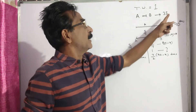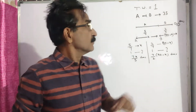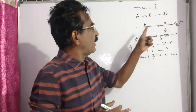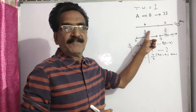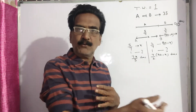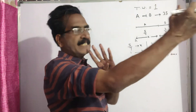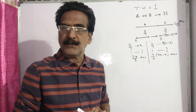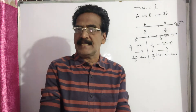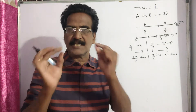A and B can complete a work in 35 days. If A completes 5/7 of the work and leaves the remaining work to B, then it takes 90 days to complete the total work. Then, in how many days can A alone complete the work is the question.